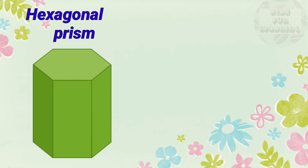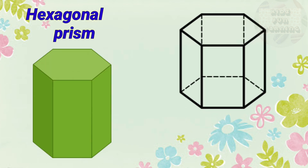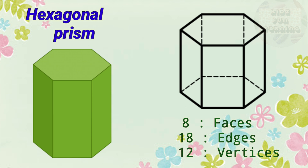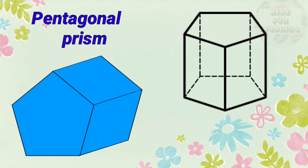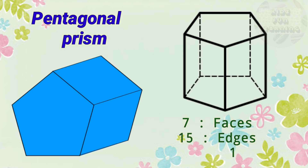Hexagonal Prism: 8 faces, 18 edges, 12 vertices. Pentagonal Prism: 7 faces, 15 edges, 10 vertices.